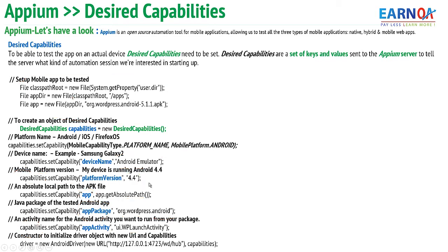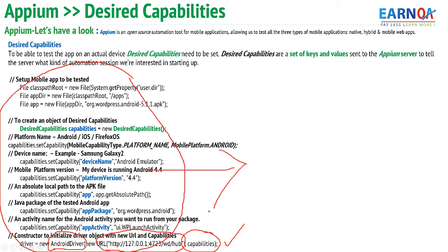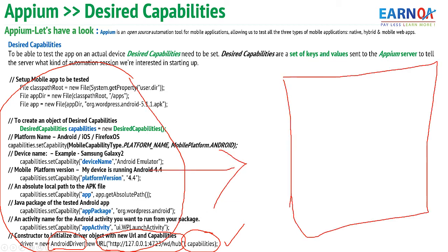At the end it is important to note: on my driver, we initiate the Android driver with the URL where the Appium server is sitting. That Appium server reads and understands the capabilities we specified and creates a session for us with respect to the corresponding mobile device we want to test.